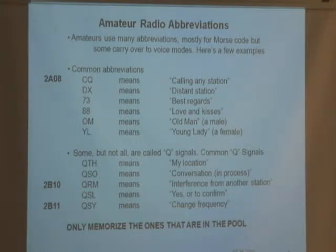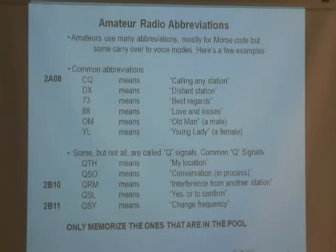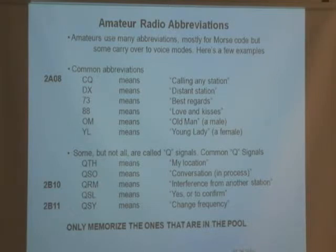For instance, someone asked me before we started: if I want to call somebody, what do I say? The Morse code people had abbreviations for everything. The two letters CQ meant 'calling any station.' So if I was on Morse code, instead of typing out C-A-L-L-I-N-G-A-N-Y, I'd just send CQ, CQ, CQ and give my callsign K1DFO. And if someone heard you calling CQ, they would answer you back.